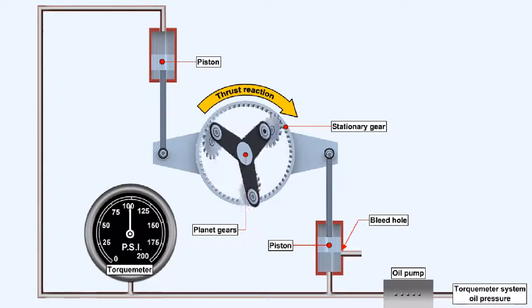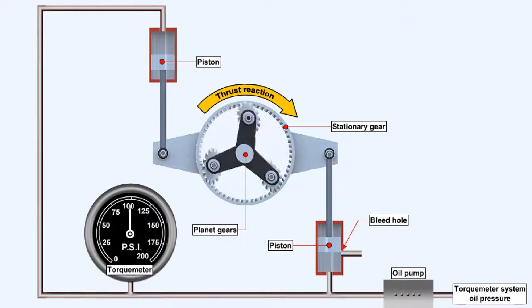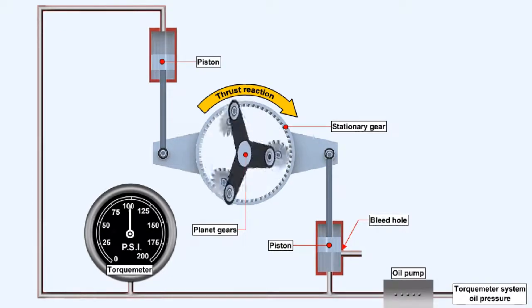While the engine is running, the piston in the cylinder with the bleed orifice will take up a sensitive position where the oil pressure generated by the torque meter pump just balances the thrust being generated on the stationary gear.